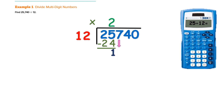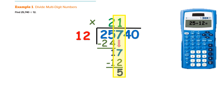Now I'm ready to bring down my next number. I ask: will 12 go into 17? Yes, it will. Since I just used the 7, when I ask my question — will 12 go into 17 — my answer of 1 has to go right above the 7. Then I multiply: 1 times 12 is 12, and I get a remainder of 5 when I subtract. Now I'm ready to bring down my next number.